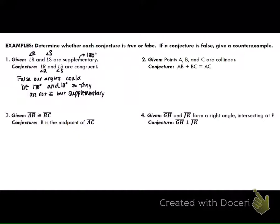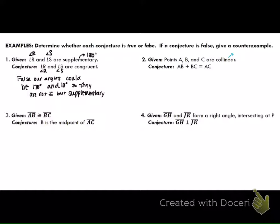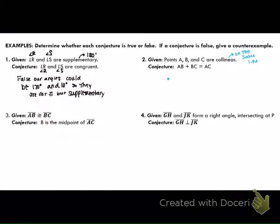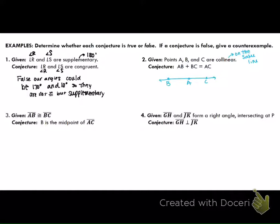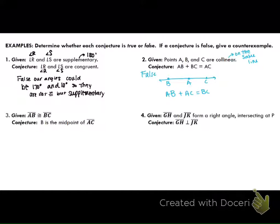Given A, B, and C are collinear — on the same line — AB plus BC equals AC. Is that true or false? Does it tell you which one has to be in the middle? No. So if B is not in the middle, then this would be false — for example, if A is in the middle, then AB plus AC equals BC, not AB plus BC equals AC. Since it doesn't tell you which one is in the middle, this is false. If it had said B was in the middle, then it would be true.